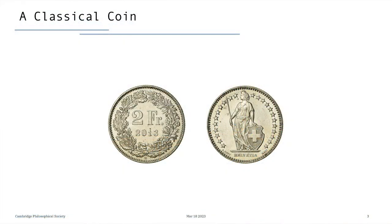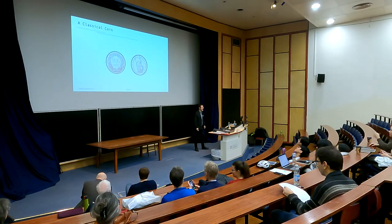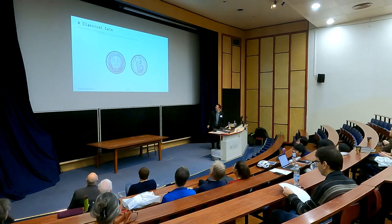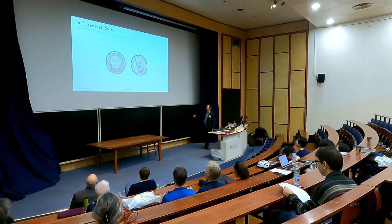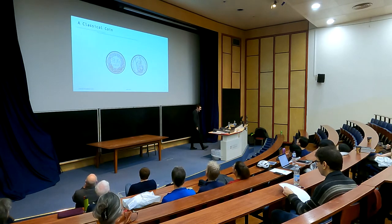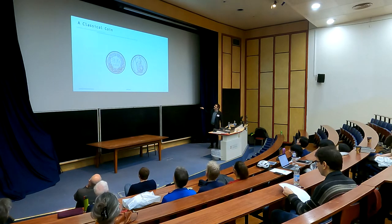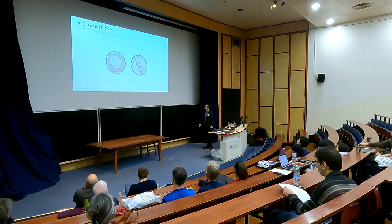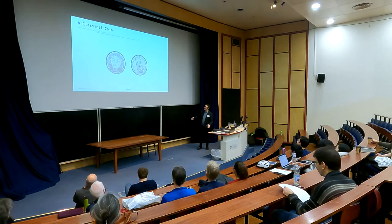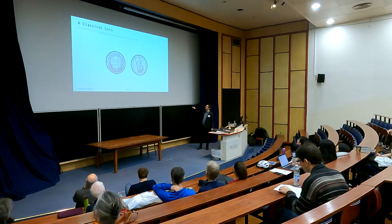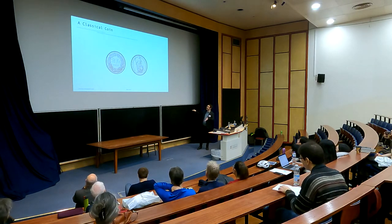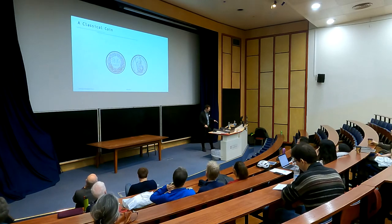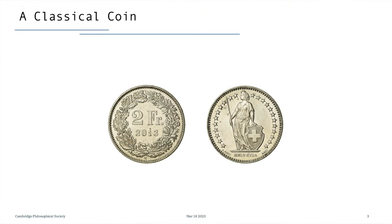I will start my introduction with the classical world. My version of the classical world is a coin — I am taking here a two Swiss franc coin. I apologize for not using pounds, but as you can see we also don't use euros, so we have that in common. In the classical world, if I have a coin sitting on a table, you can immediately read the state of the coin, meaning whether it is sitting on the heads side or the tails side.